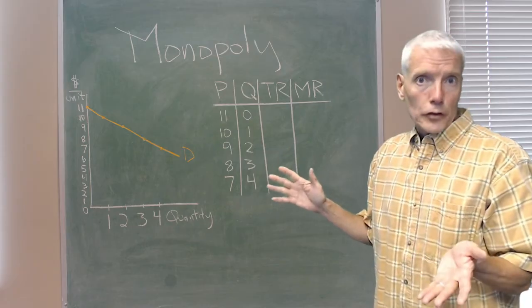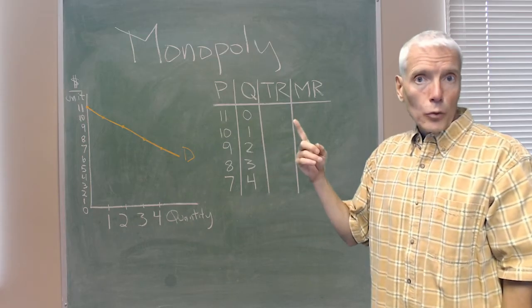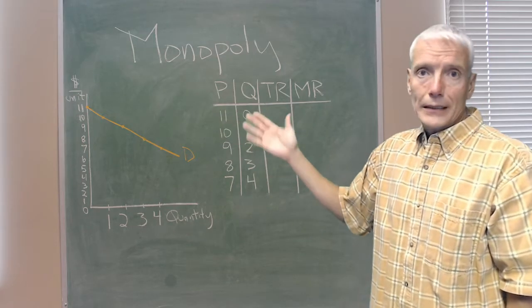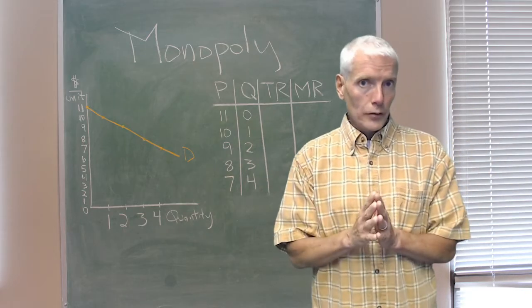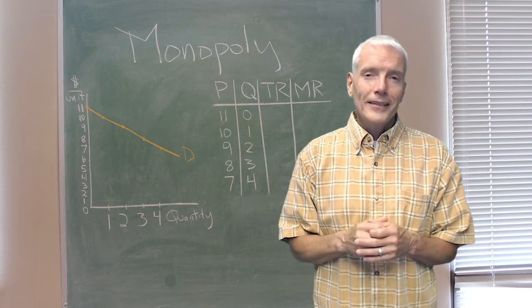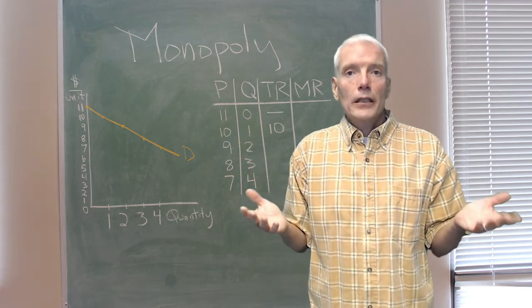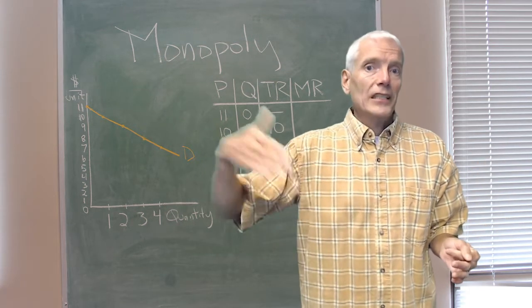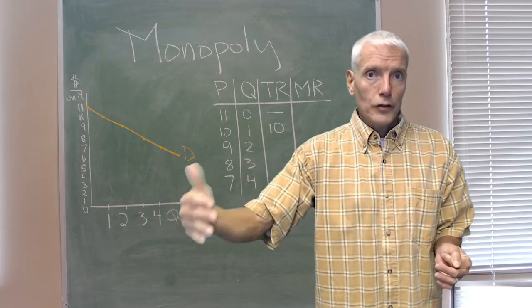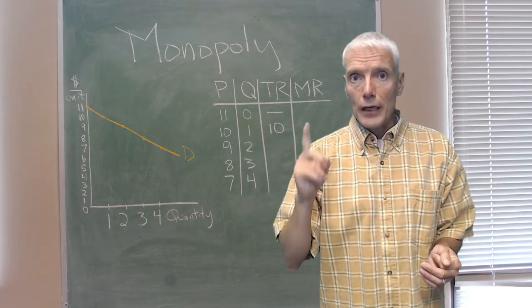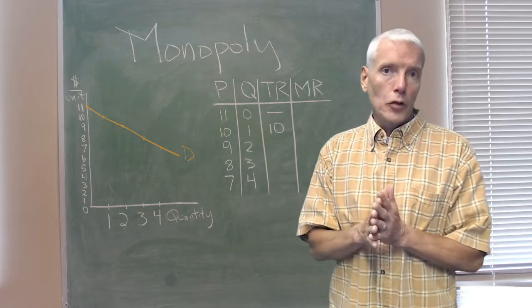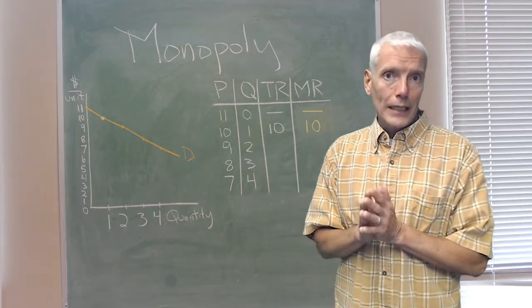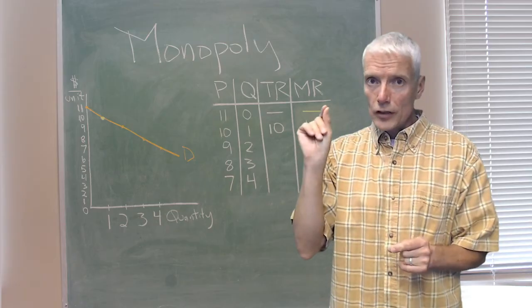What's its marginal revenue from the first unit? In order to sell one, it has to lower its price to $10 and it sells one unit at $10 so the total revenue, which is the total number of dollars that it takes in, is $10. Its marginal revenue is the addition of revenue when it sold that last unit, that first unit. And so marginal revenue equals the total revenue and the price of $10. That first unit is special though.